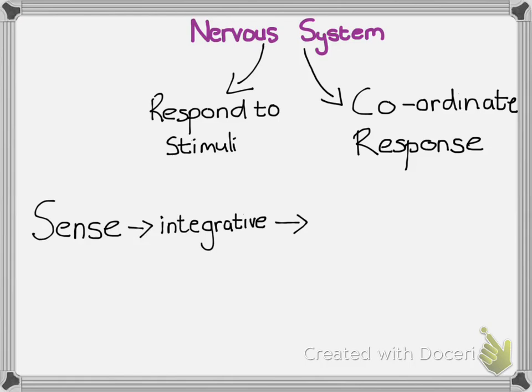Once you've created this response through integrating all of the information, you then move into the motor function. We are familiar with motor in that it refers to movement. These can be extremely small movements, like your pupil changing in size, or as large as your muscles contracting and moving your arm away from a hot surface. So the nervous system senses a change, integrates the information, and creates a motor response.